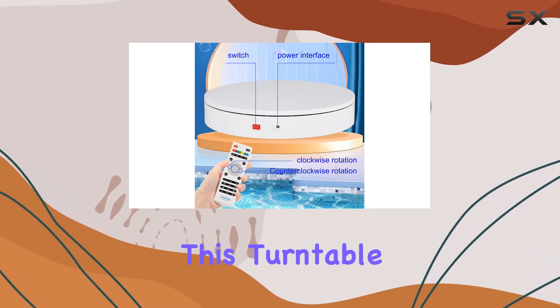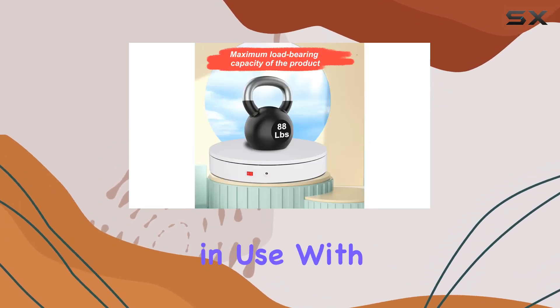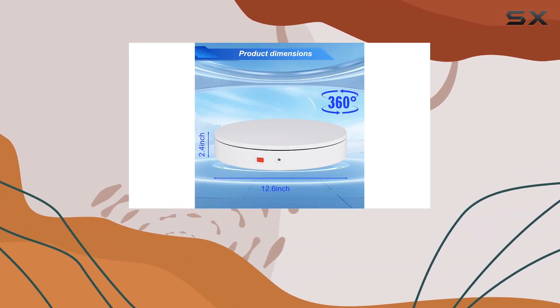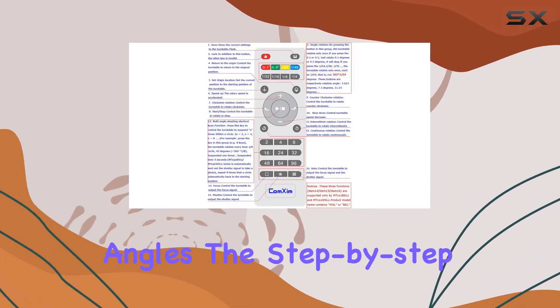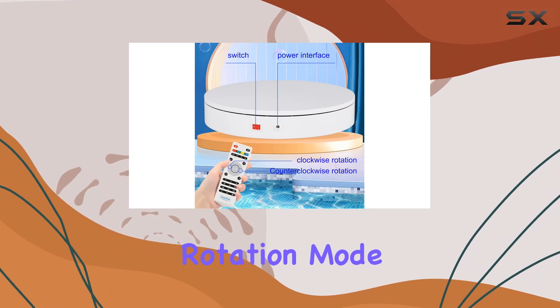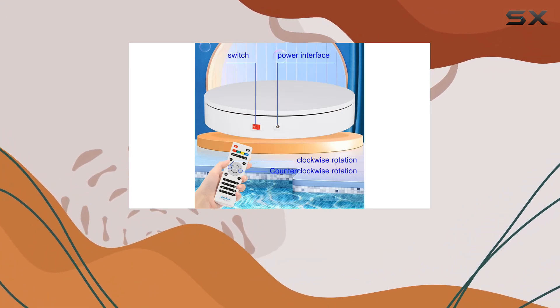What sets this turntable apart is its flexibility in use. With two rotation modes, continuous and intermittent, you have the freedom to capture your products from various angles. The step-by-step mode is a fantastic option for 3D scanning, while the continuous rotation mode is perfect for dynamic product displays.